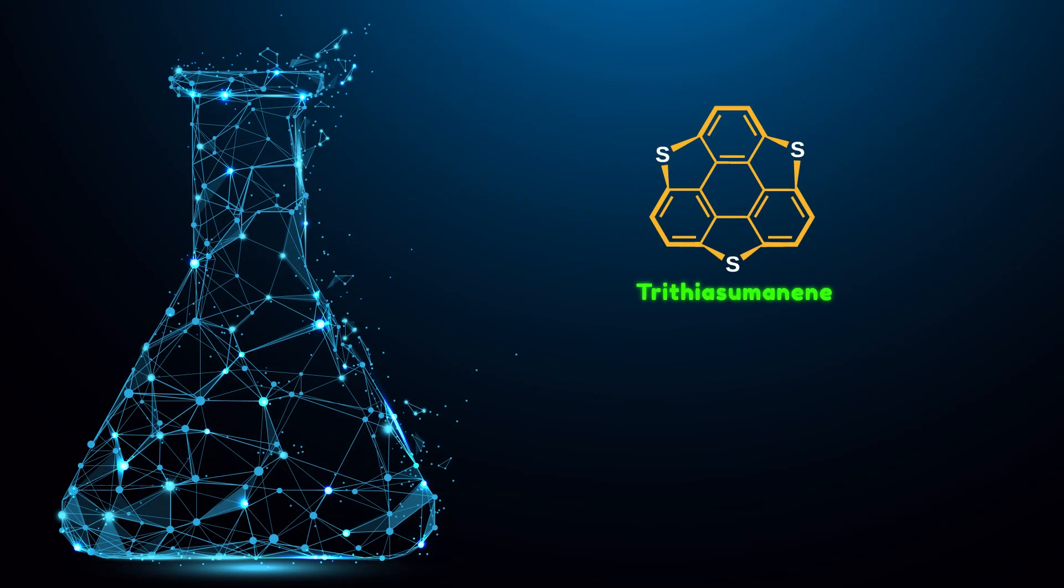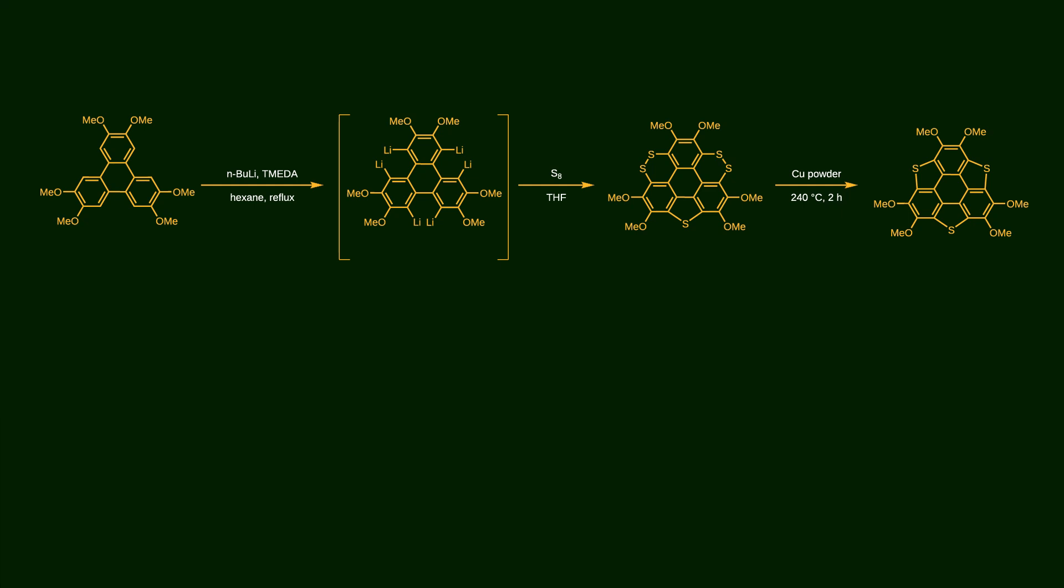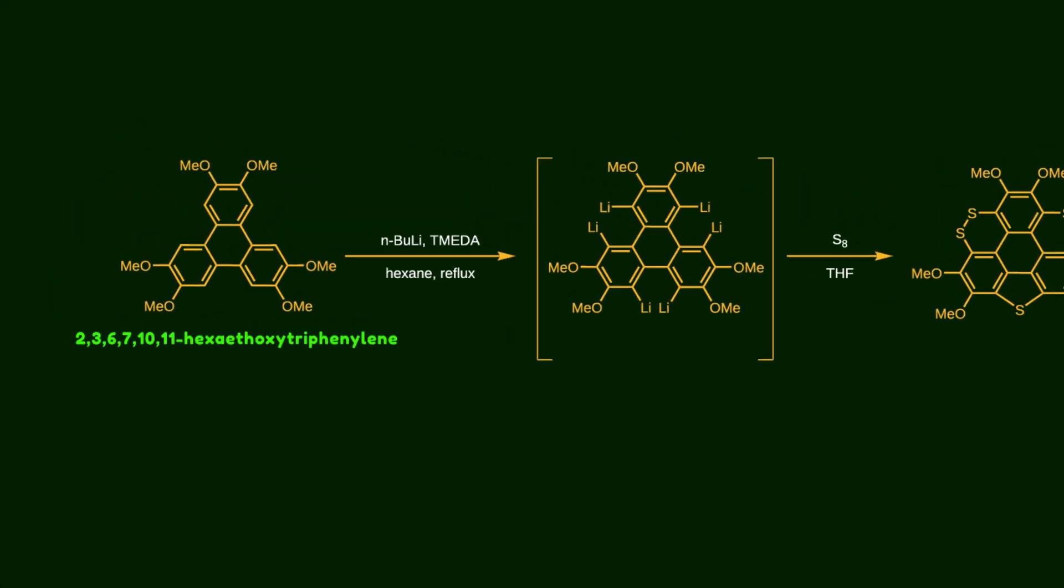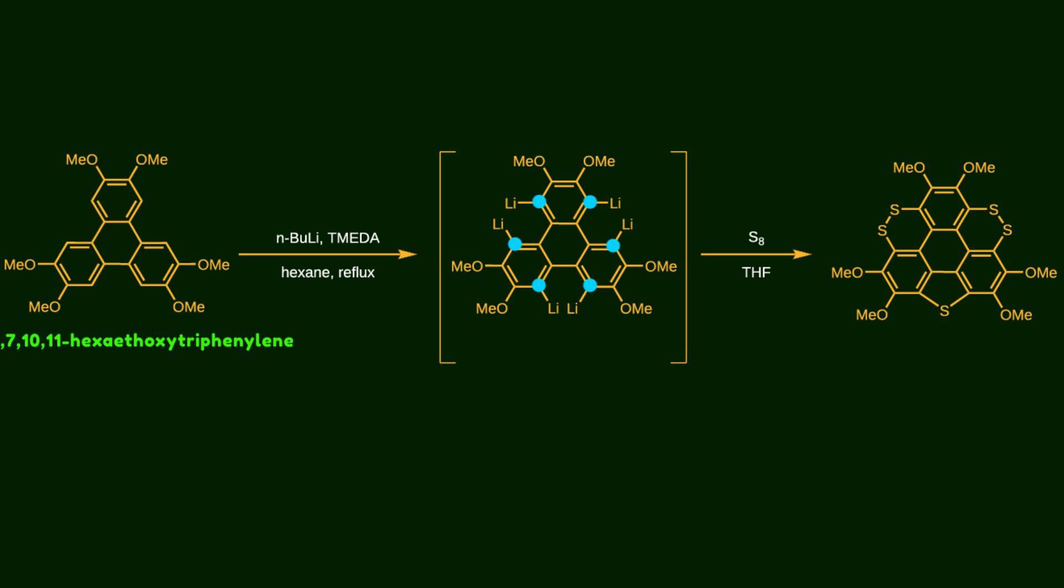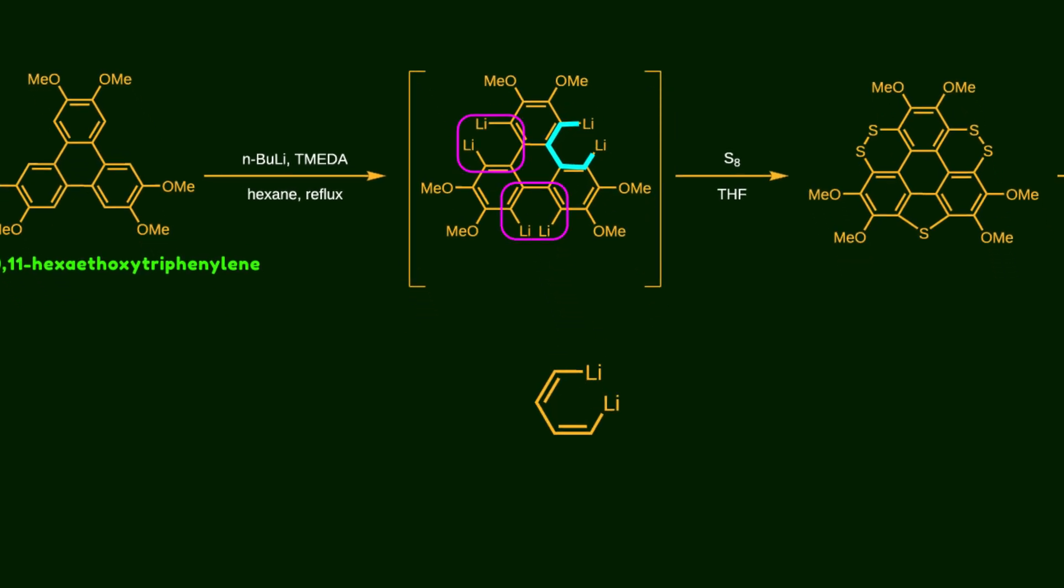Now let's go through the synthetic pathway of trithiasumanene. The synthesis begins with the triphenylene skeleton with six methoxy groups. In the first step, all six ortho positions are lithiated by n-butyllithium. As you might guess, it sounds like a weird reaction because it doesn't look like a stable transition state. So let's break down what's going on. I'm going to take this dilithiated part of the molecule, with a pattern repeated across the whole pi system, in which two lithium atoms are linked by two pi bonds.